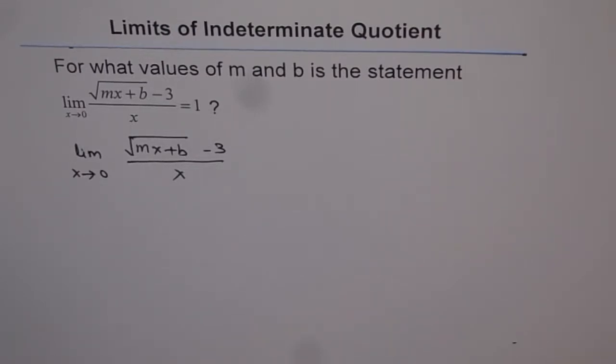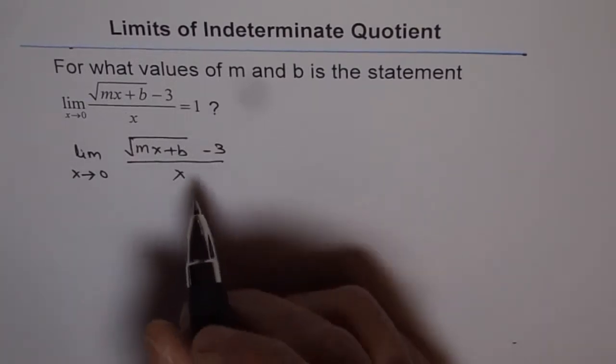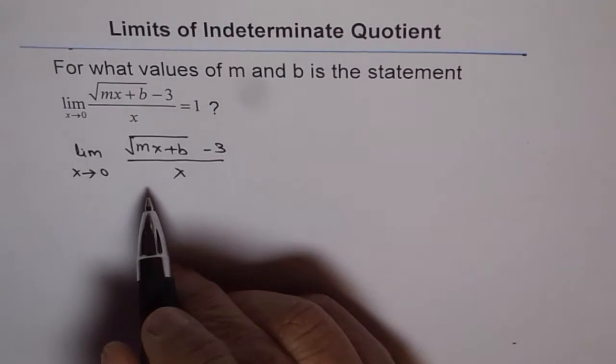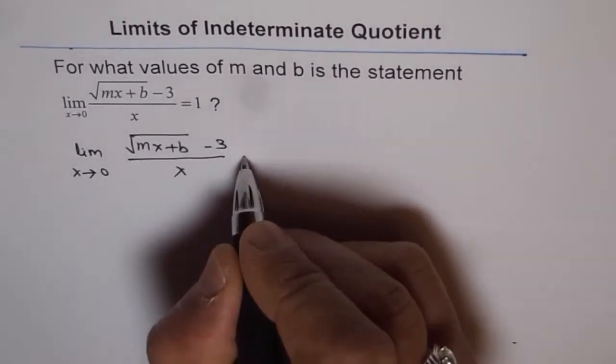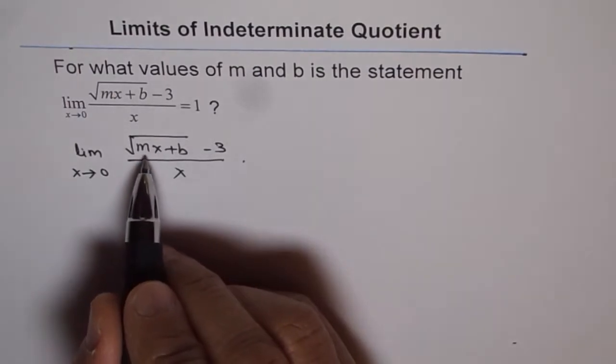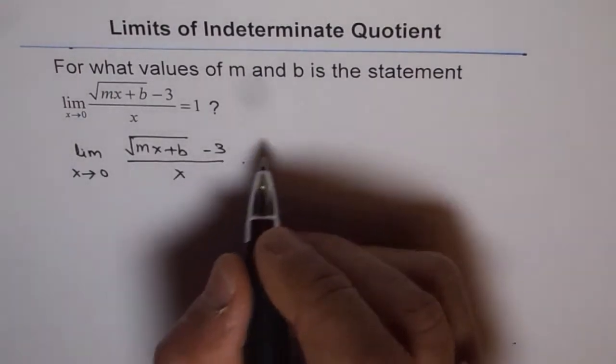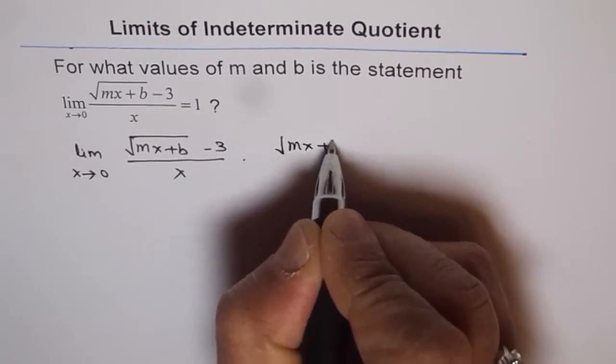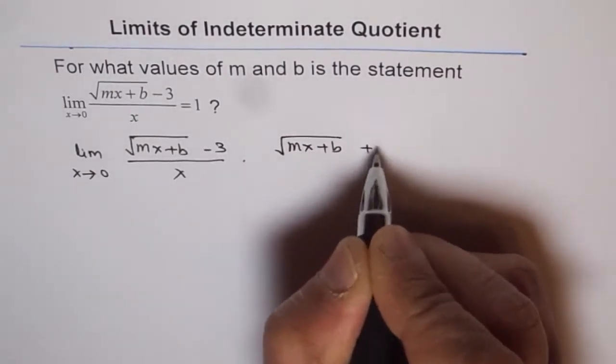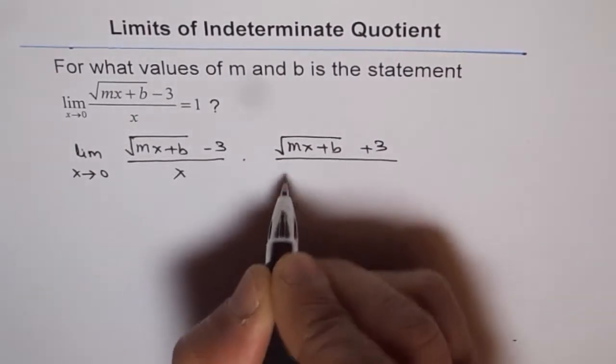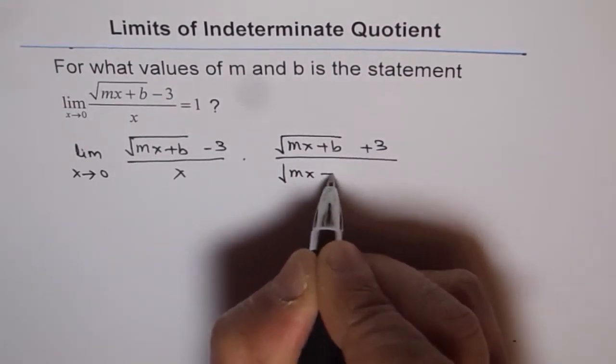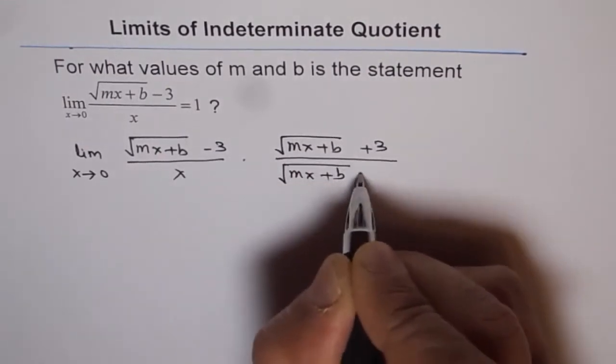And to find that limit, what are we going to do? Since there is square root, we will rationalize. So we'll rationalize this function. To rationalize it, we need to multiply this with conjugate of numerator, which is square root of mx plus b plus 3. So we'll multiply and divide by square root of mx plus b plus 3.